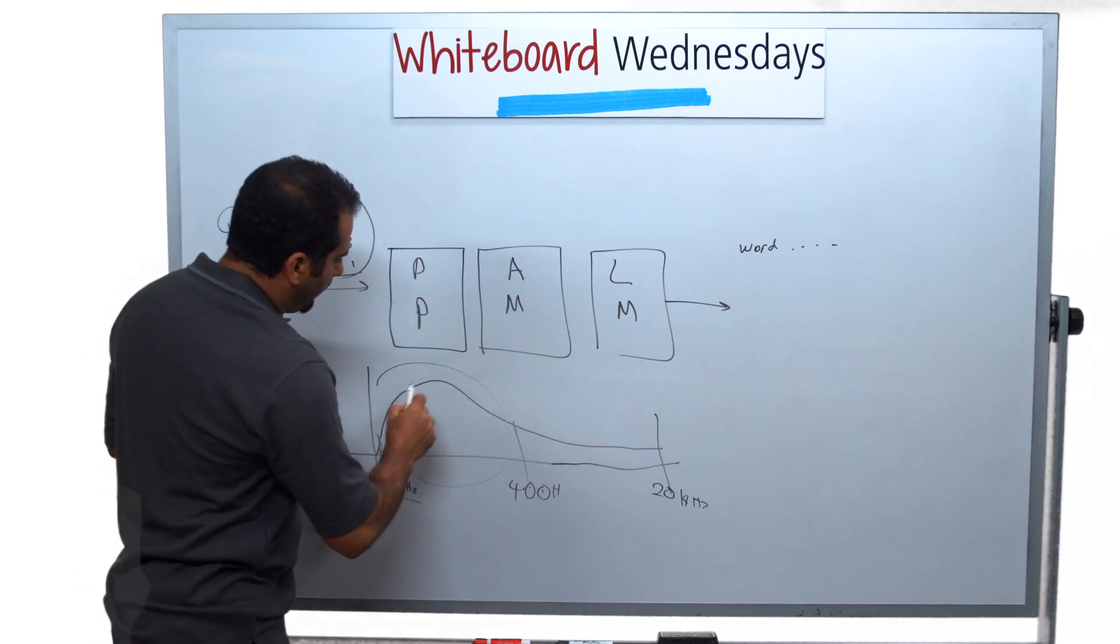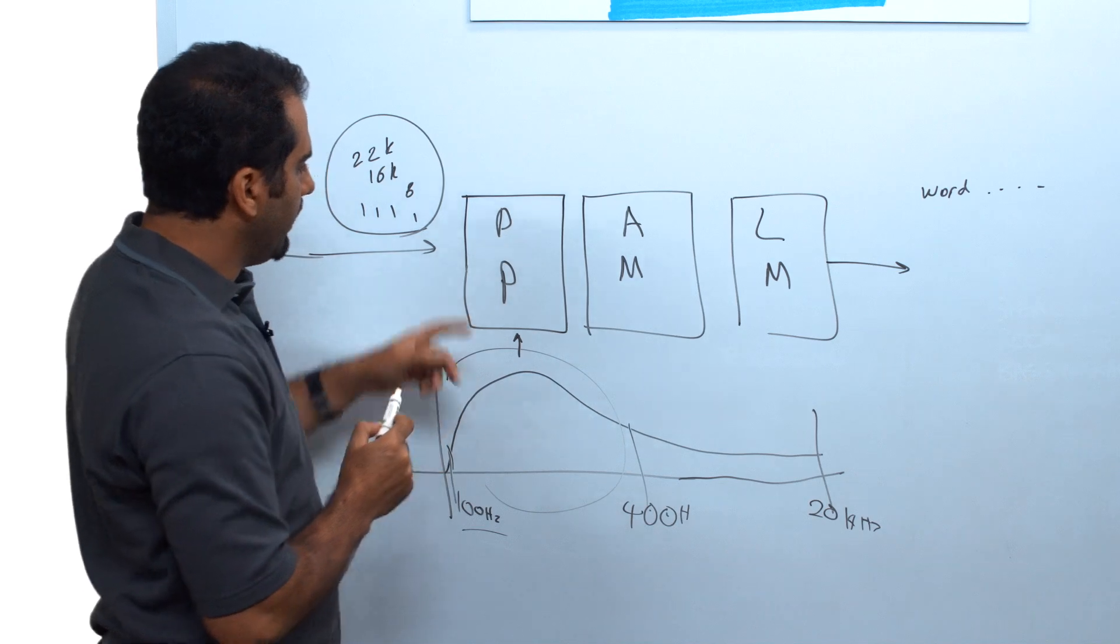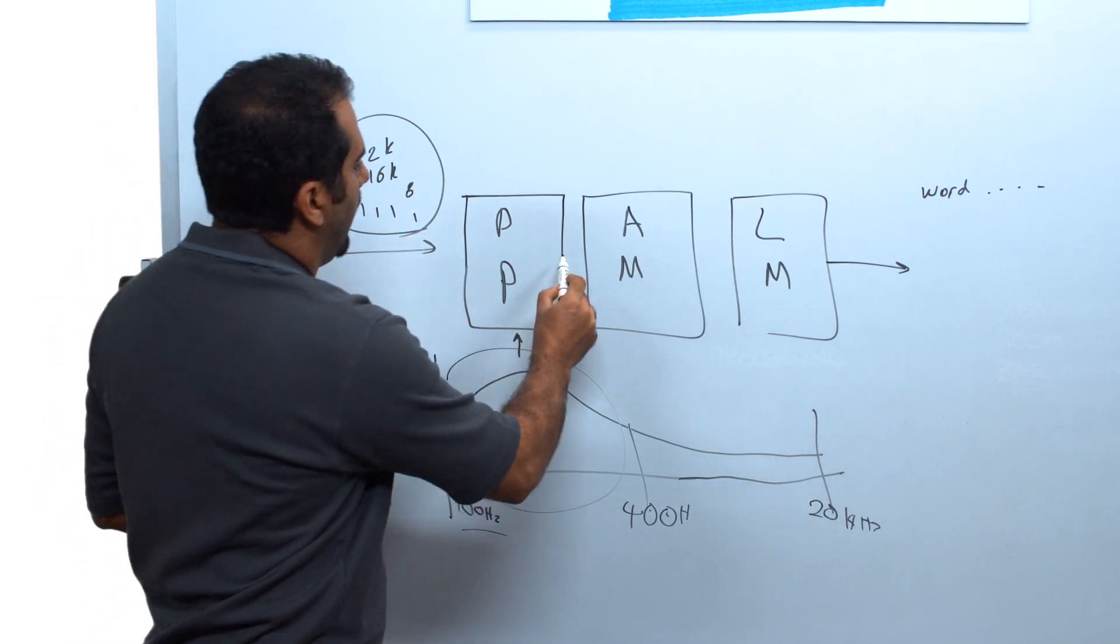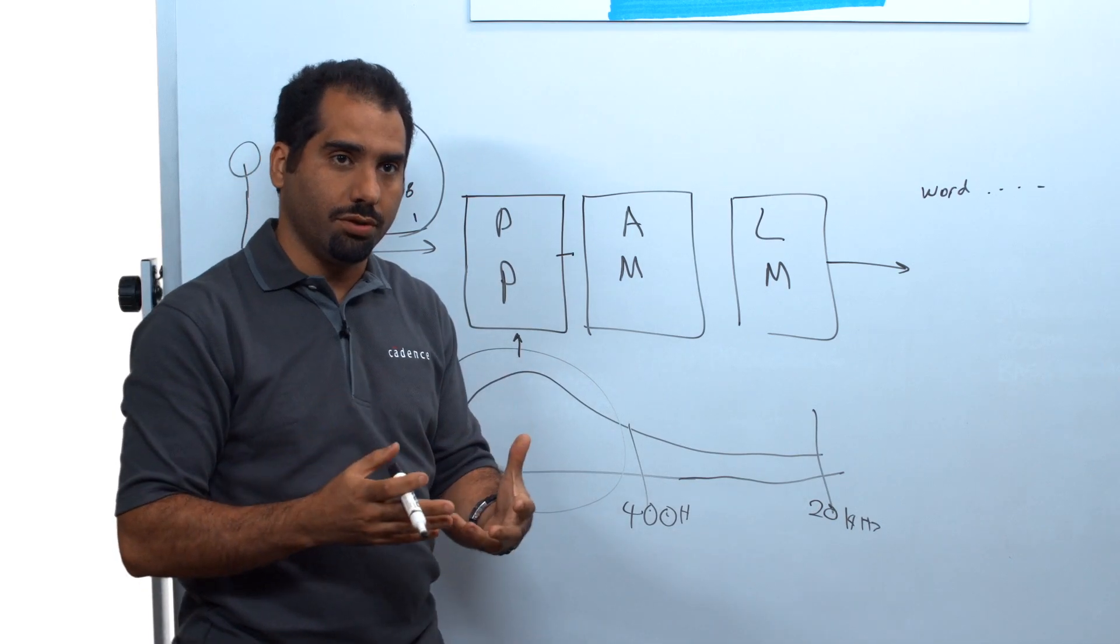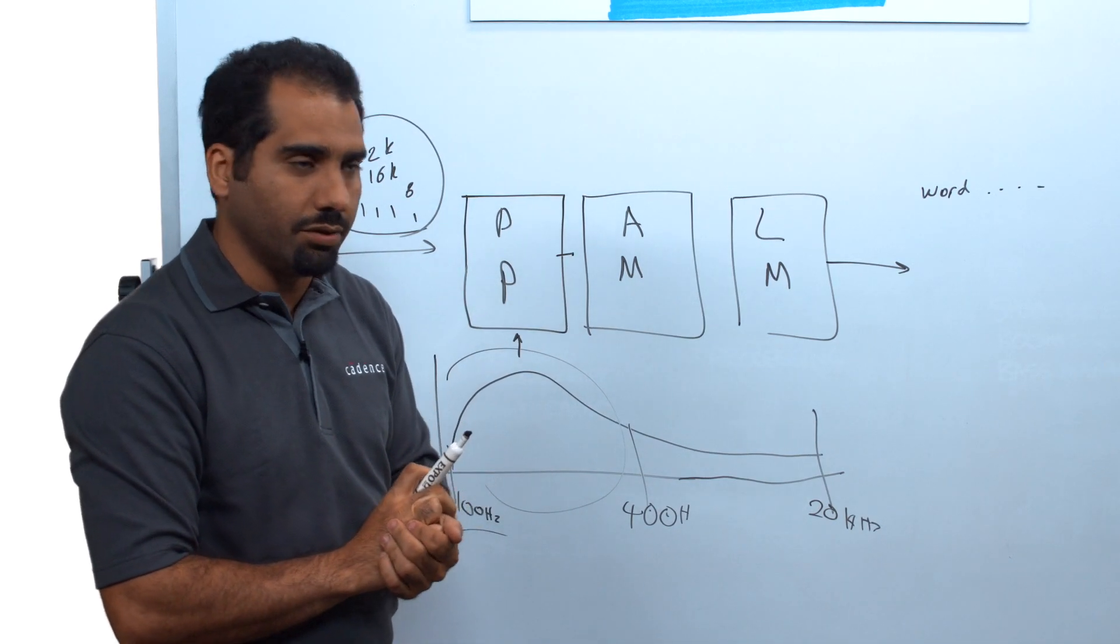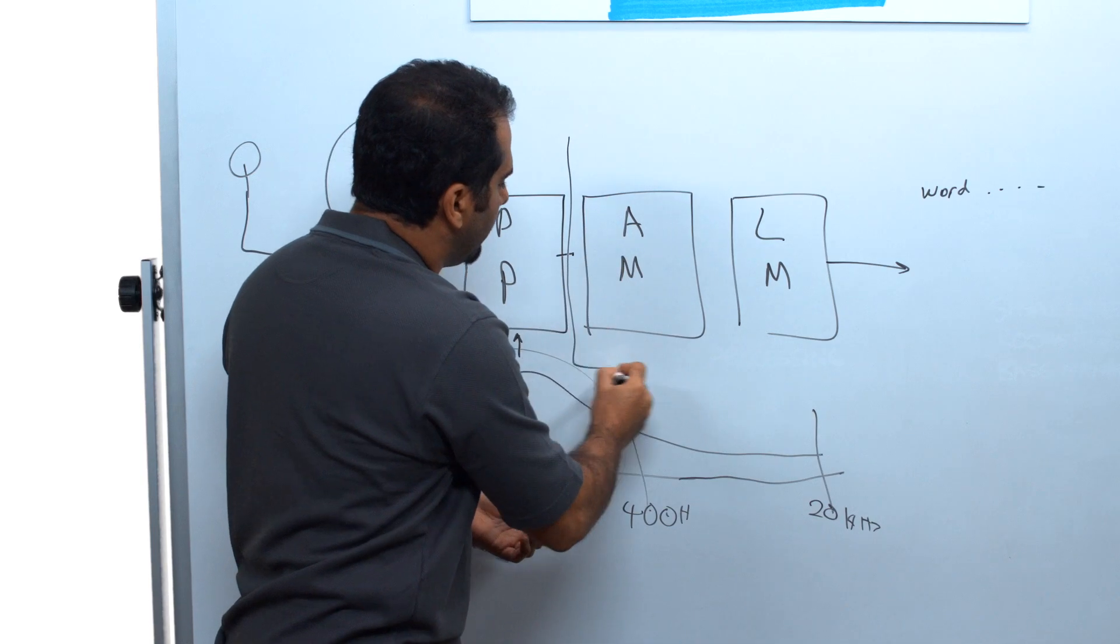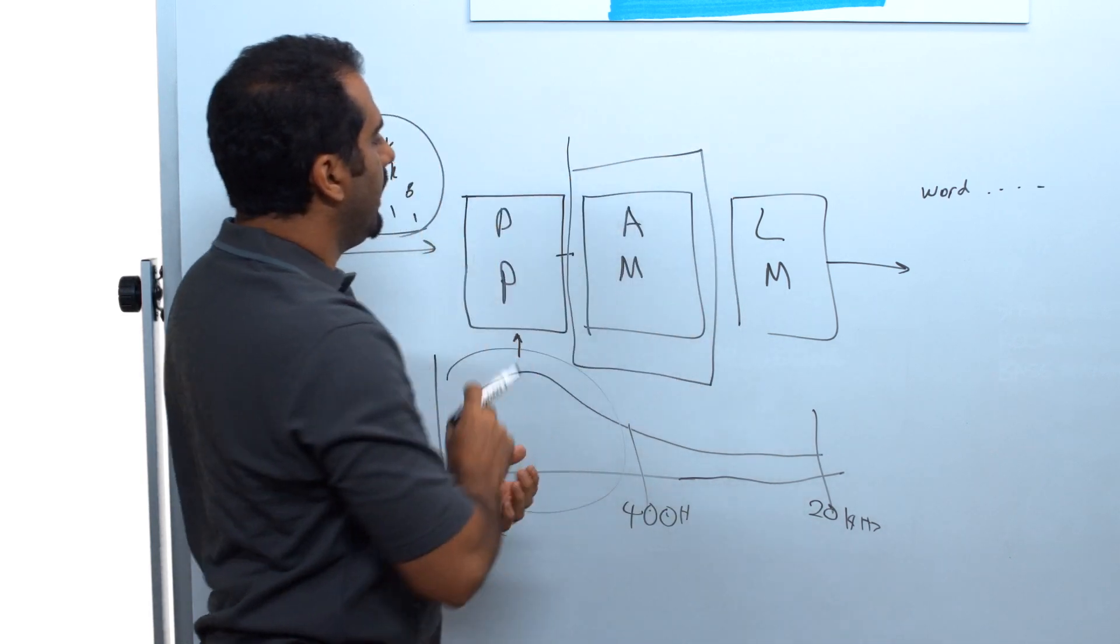Now, the output of here is what I call enhanced features, enhanced acoustic features. These enhanced acoustic features get picked up by the second block, acoustic model.